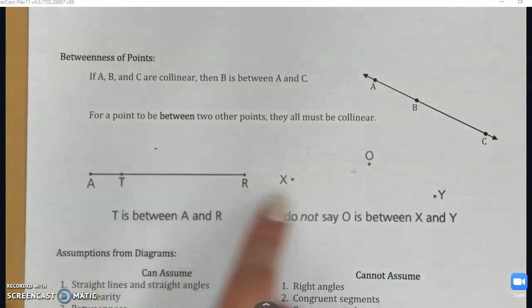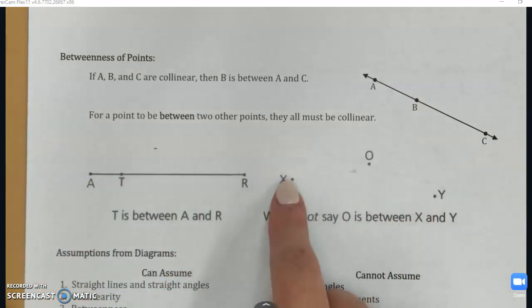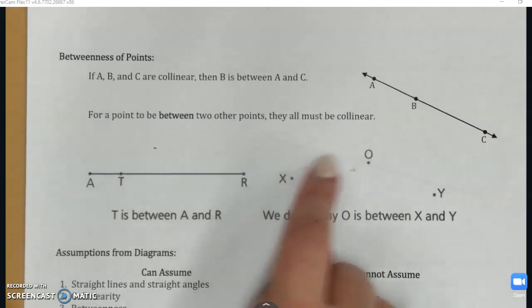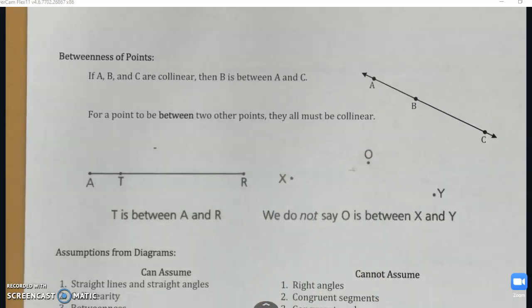But over here, with X, O, and Y, we can't say one of them is between the other because I can't draw one line to connect them all. So betweenness can only exist when the points all lie on the same line.